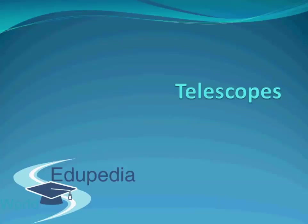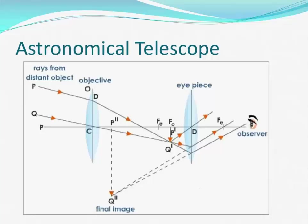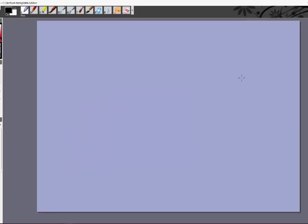Hello everyone and thanks for watching Edupedia World videos. In this video we learn about the different types of telescopes and their functioning and working. The first type of telescope we study is the simplest and most common type, called the astronomical telescope, and this is a ray diagram for the telescope.